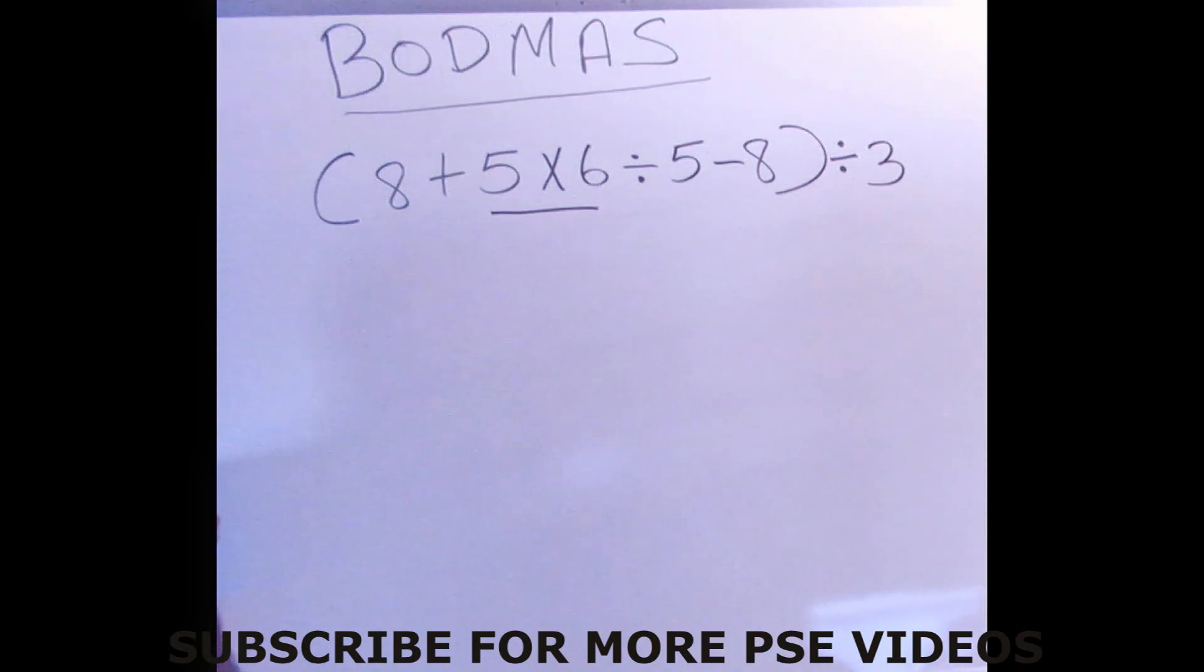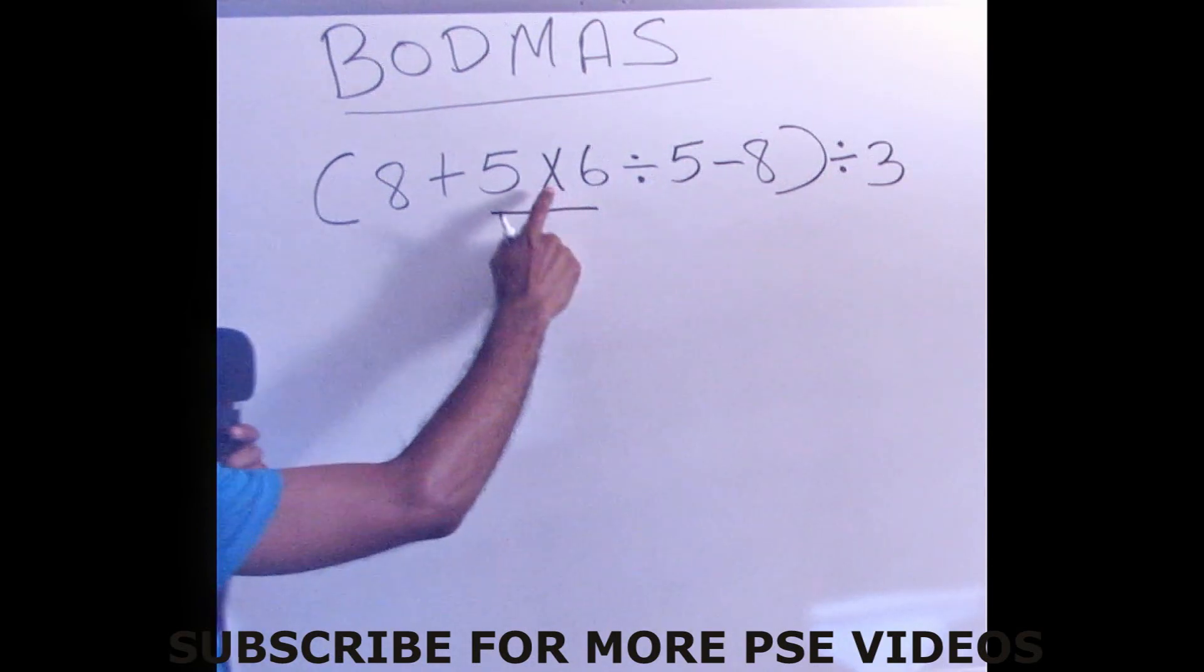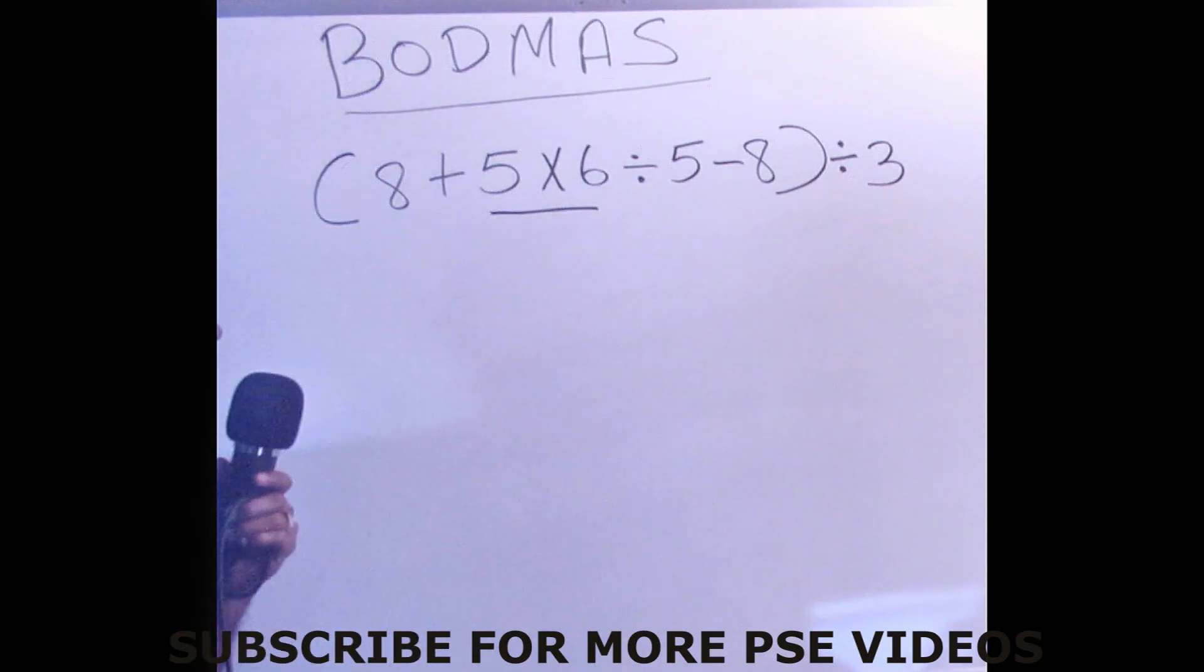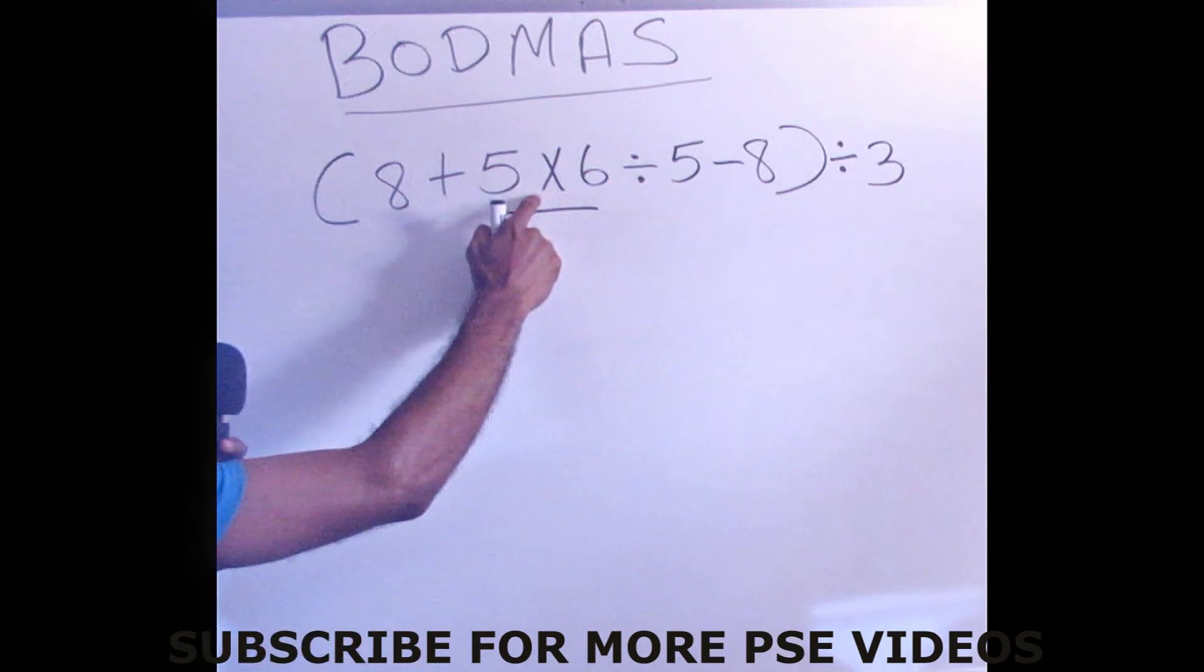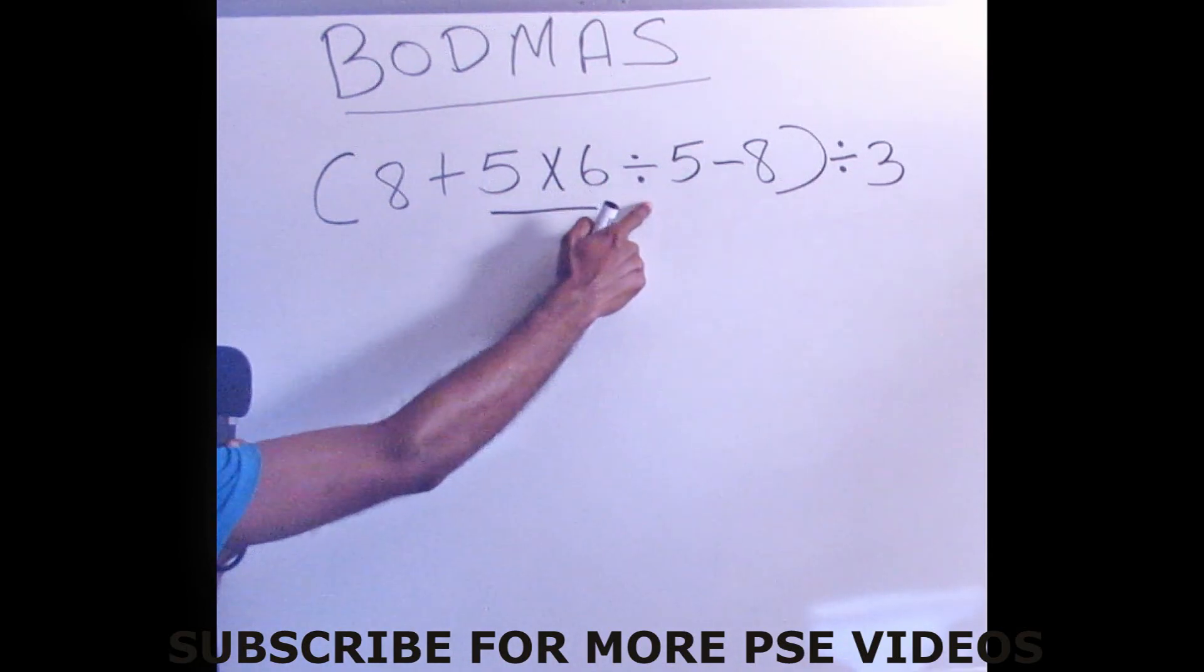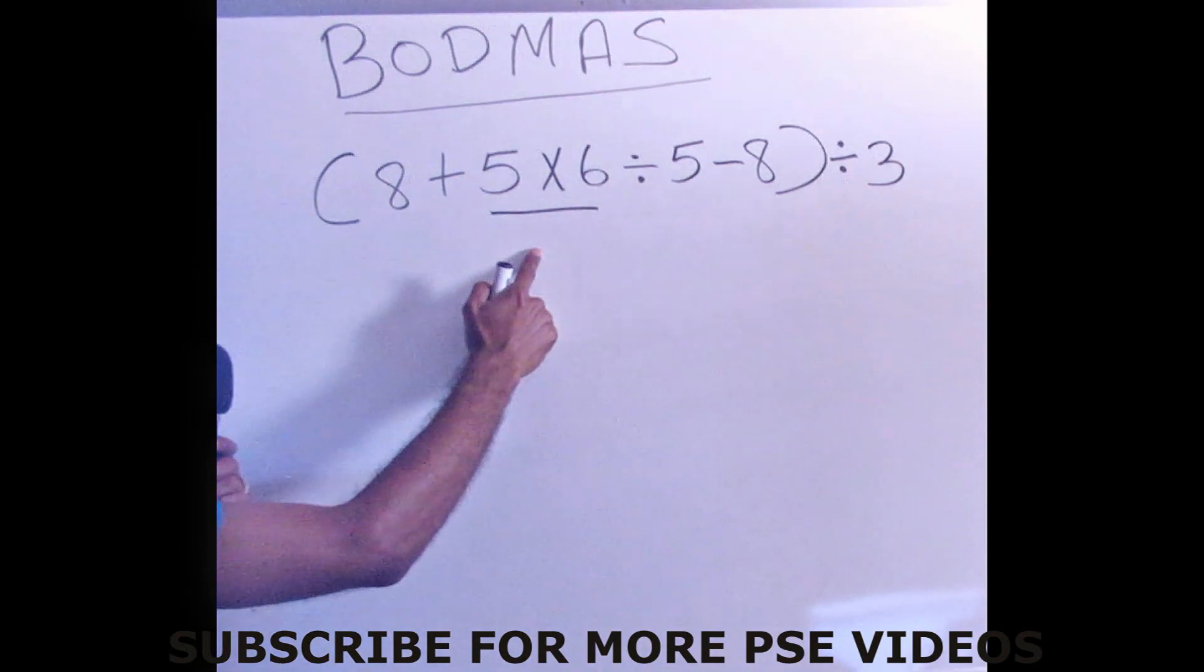So let's go straight into solving our problem. Remember the rule says that you solve what is in bracket first, and in this bracket problem we have an addition, a multiplication, a division, and a subtraction in bracket. So the rule is that multiplication is before division, so we'll start our problem with multiplication.